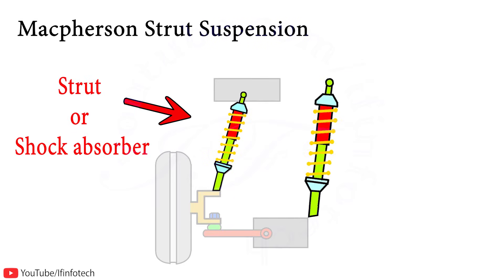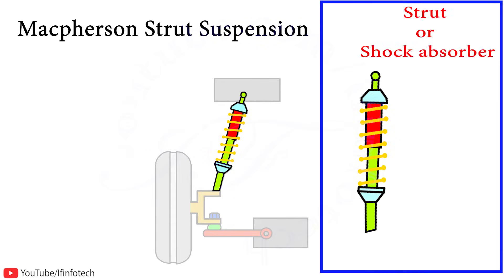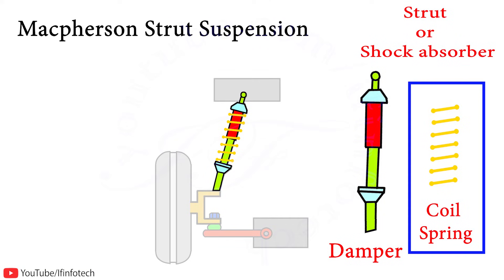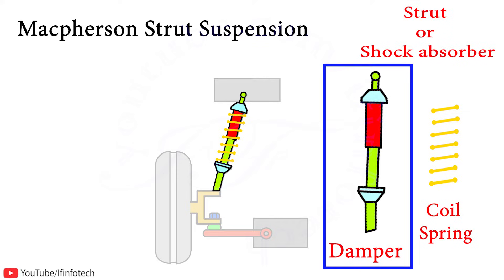The MacPherson strut system consists of a strut or shock absorber which includes a coil spring and damper. The purpose of the coil spring is to store energy from shudder from the road surface, and this stored energy dissipates in the form of heat with the help of the damper, which uses hydraulic fluid.